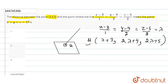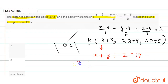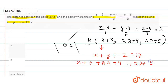Since point Q lies on both the line and the plane, it must satisfy the equation of the plane as well. Putting the general point into the plane equation x + y + z = 17, we get: (λ + 3) + (2λ + 4) + (2λ + 5) = 17.